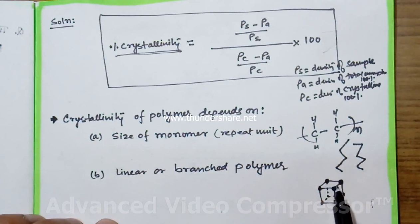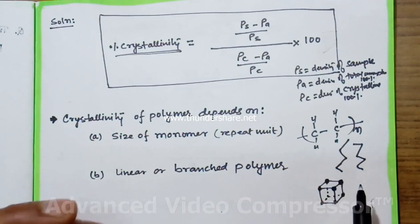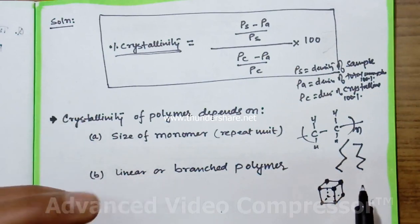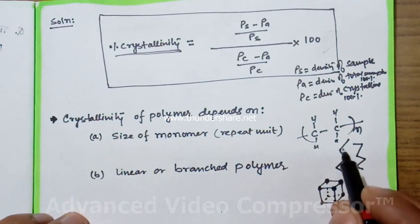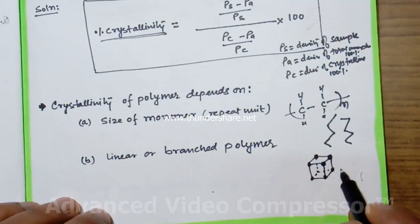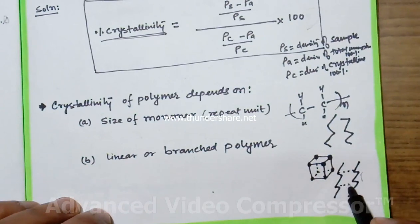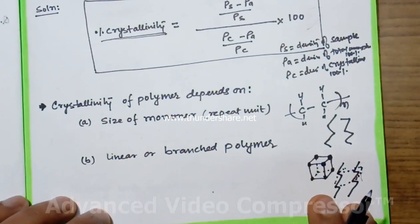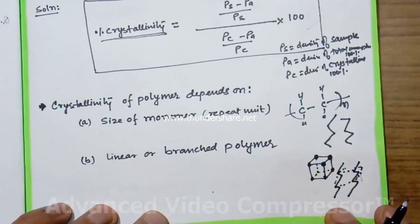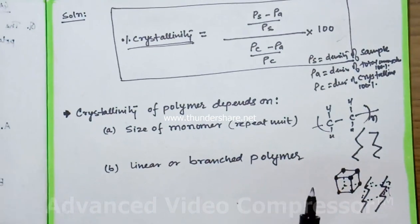To define crystallinity we consider the chain structure. If you get similar chain structures, we can somehow draw a unit cell and say that the material is somewhat crystalline. But this is difficult because it's a very large chain. Crystallinity of polymer depends on two factors.